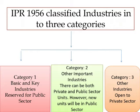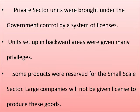Category two: other important industries, which can be both private and public sector units, however new units will be in the public sector. Category three: remaining industries, open to the private sector. Private sector units were brought under government control by a system of licenses. Units set up in backward areas were given many privileges, and some products were reserved for the small scale sector — large companies would not be given a license to produce these goods.